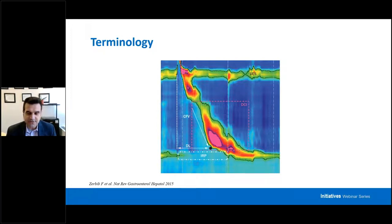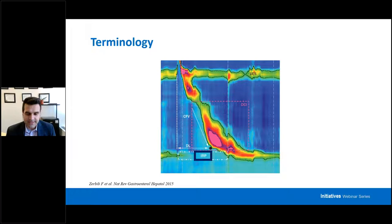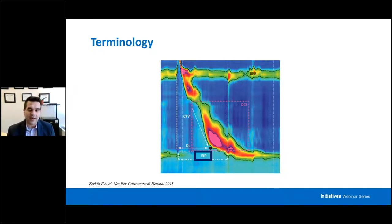Some basics in terms of the metrics we use with manometry. The first is the integrated relaxation pressure, or IRP. That's where you're really looking at the adequacy of EGJ relaxation. The software will help you with this if you put all the markers in the right place. What you're trying to understand is: in the 10 seconds right after the UES relaxation begins, is the EGJ relaxing adequately? If that number ends up too high, that's when you start thinking about achalasia or EGJ outflow obstruction. If it's normal and there's another disorder, that's when we talk about the other motility disorders besides those two.